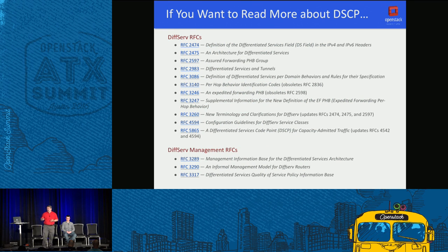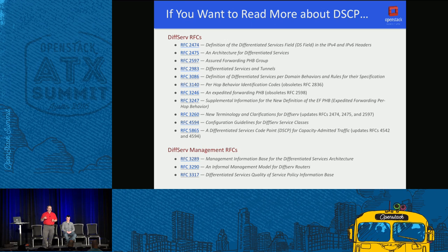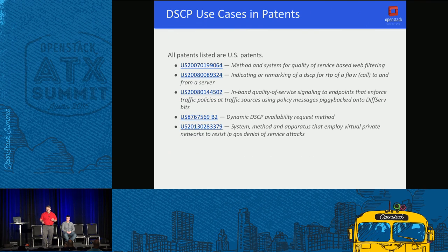DSCP is defined by many RFCs - differentiated services is the general category DSCP falls under. These canonical references define every aspect of how DSCP is implemented and handled, including how network devices inspect and handle DSCP-marked traffic. There are also patents related to how DSCP could be used and implemented for various business cases.